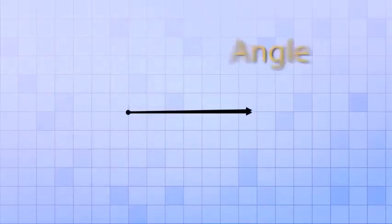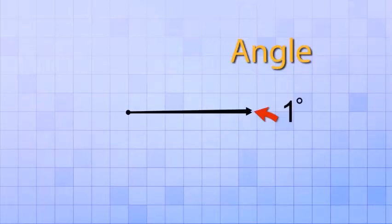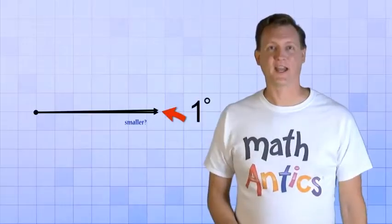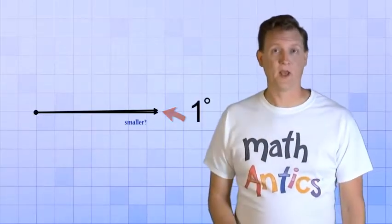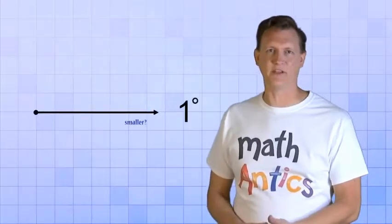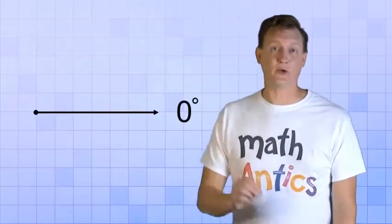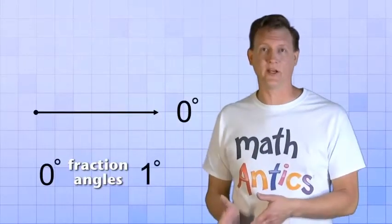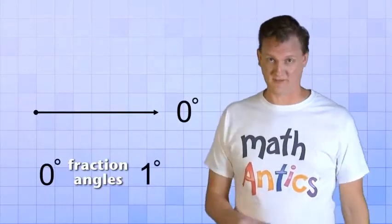Our rays now form an angle that measures 1 degree. And as you can see, 1 degree is a really small angle. We need to zoom in on it to see that it really is an angle. In fact, you might wonder if there could be any angles smaller than 1 degree. Yup, there sure are. And we saw one just a second ago. Before we rotated our top ray, when our rays were exactly on top of each other, that was a 0 degree angle. And there's a whole range of tiny fraction angles in between 0 and 1 degree. But we aren't going to learn about them in this video.